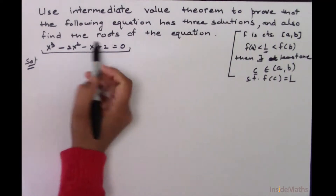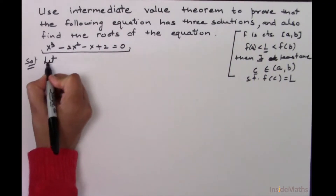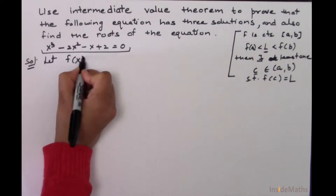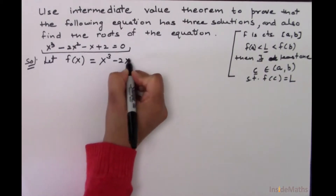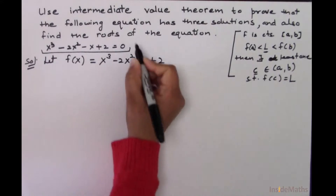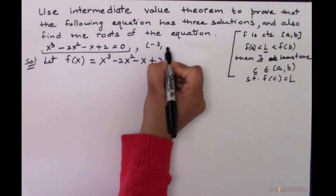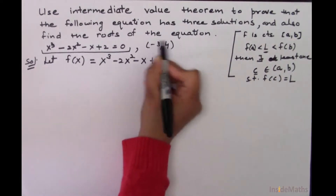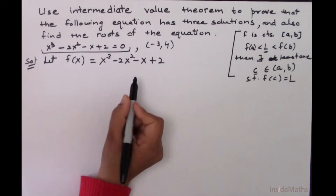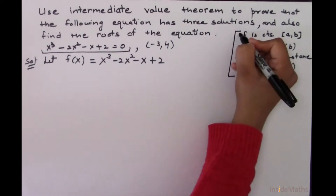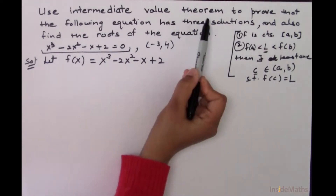Since this is given in the form of an equation, I'll assume that f of x is equal to x cubed minus 2x squared minus x plus 2, and the interval is given as minus 3 to 4. This is the function. First we'll check the two conditions, then we'll apply the Intermediate Value Theorem.